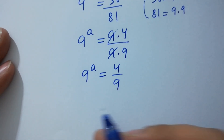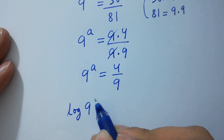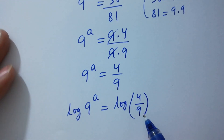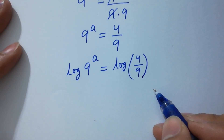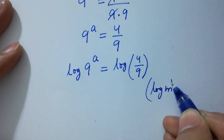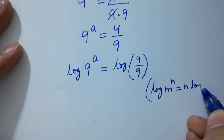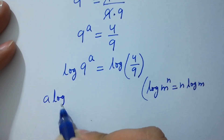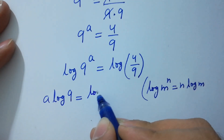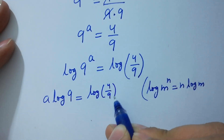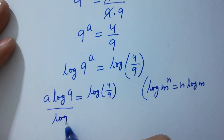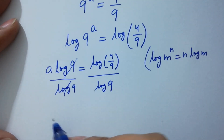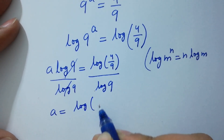Take log on both sides: log 9 to the power a equals log 4 over 9. As log m to the power n equals n log m, it becomes a log 9 equals log(4 over 9). Divide by log 9 on both sides — log 9 and log 9 cancel — giving a equals log(4/9) over log 9.